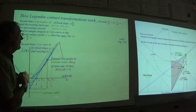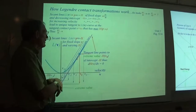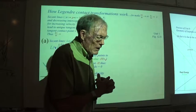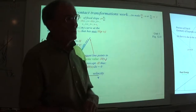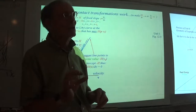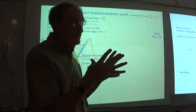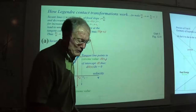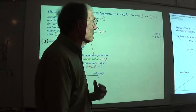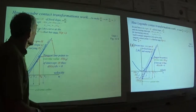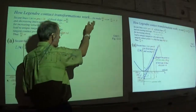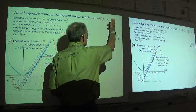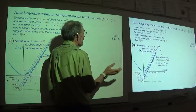Regarding the geometric approach: I thought I had figured this out myself, but it turns out Arnold, the great Russian mechanician, has something like this in his mechanics book published by Springer—called the Yellow Perils because Springer mathematics texts are yellow and formidable. My goal is to make it not formidable for physicists.